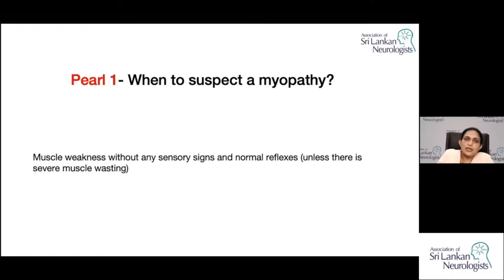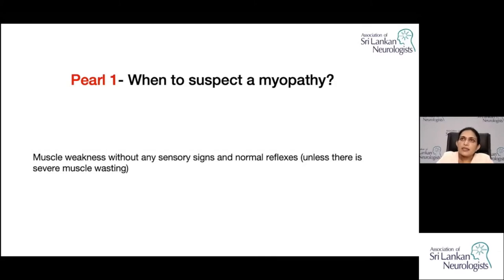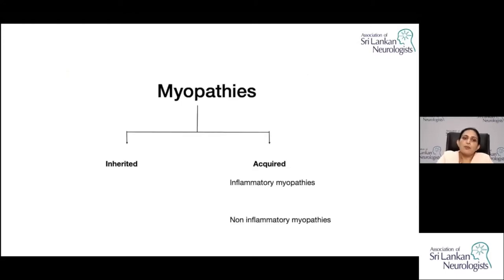The first pearl is when to suspect a myopathy when you encounter a patient. Usually patients present with muscle weakness — typically proximal, starting from the pelvic girdle, then progressing to involve the shoulder girdles. There are also entities with distal muscle involvement without sensory signs and with normal reflexes. Reflexes become diminished when muscles get significantly atrophied. Myopathies are either inherited or acquired; the inherited variety has been dealt with by Dr. Saraji already.